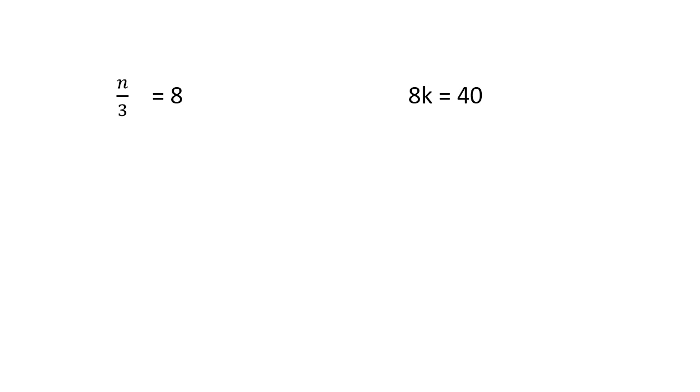So let's look at a couple problems without the teeter-totter. Here I have n being divided by 3. To undo division, I multiply. So I'm going to multiply both sides by 3. Now since I have a fraction on the left, I do need to think of it as a 3 over 1.